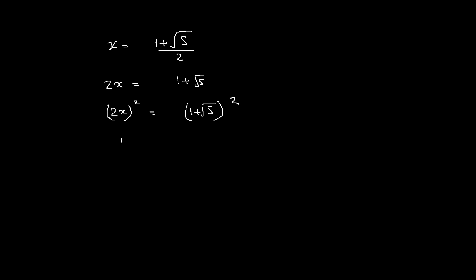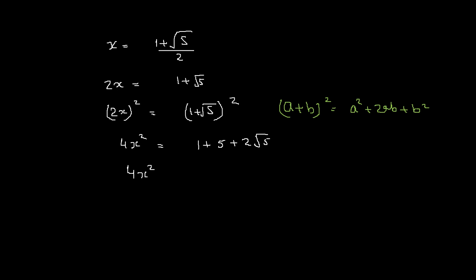That gives 4x² equals 1 plus 5 plus 2√5. This comes from the identity that says (a plus b)² equals a² plus 2ab plus b².